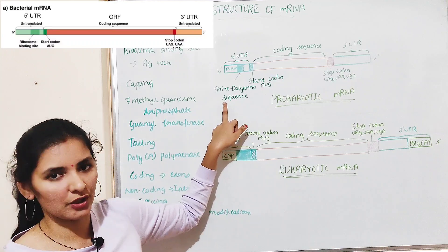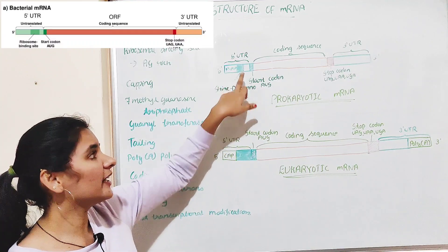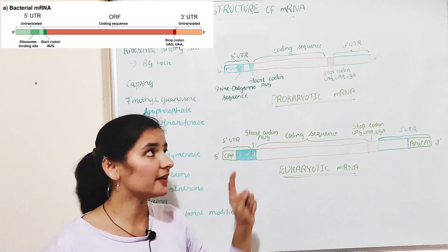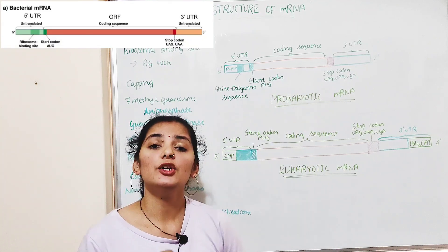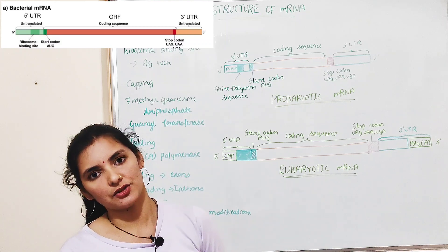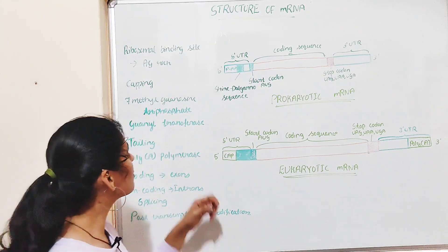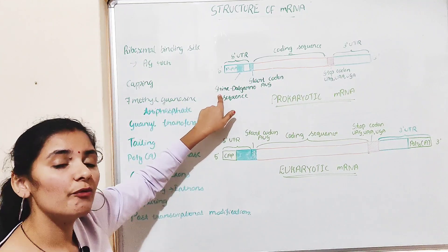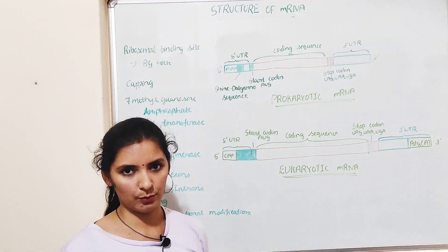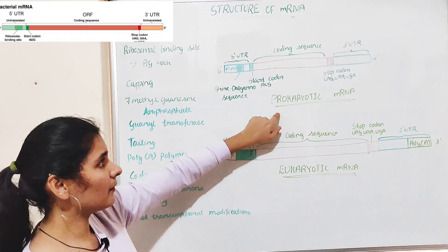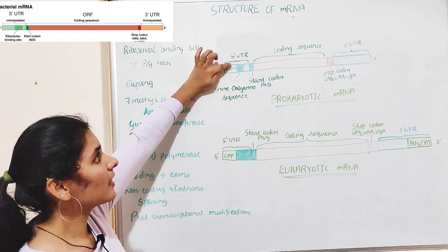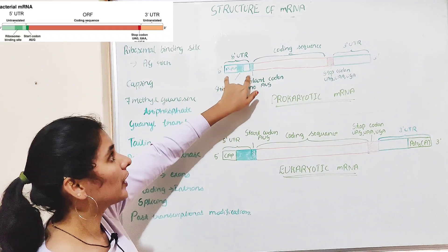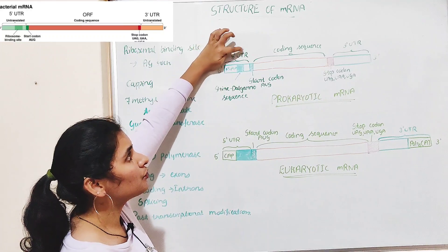The Shine-Dalgarno sequence is of great significance because it facilitates the binding of mRNA to the ribosome during translation or protein synthesis. That is why it is also called the ribosomal binding site. So prokaryotic mRNA begins with the 5' end consisting of a triphosphate group, followed by the Shine-Dalgarno sequence, which together are called the 5' UTR.